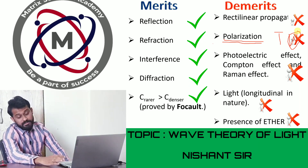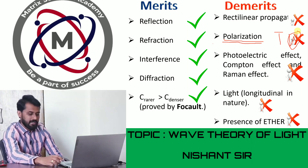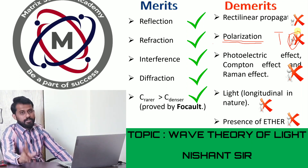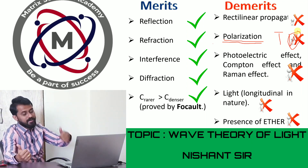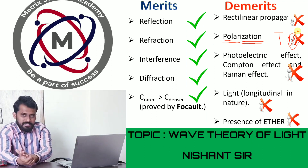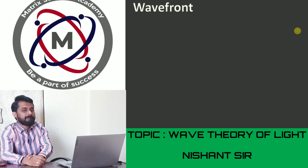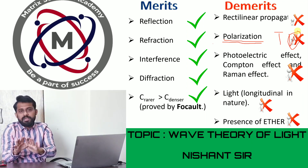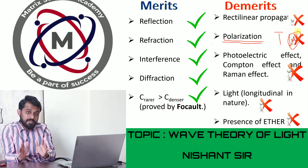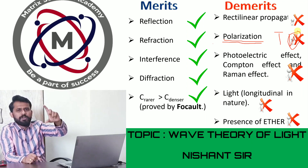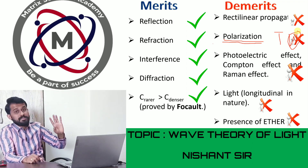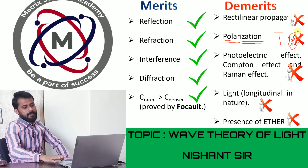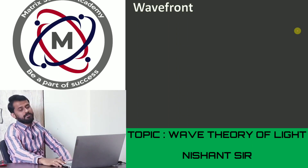Our present understanding is that light has a dual nature - both wave and particle. We use wave theory to explain reflection and refraction, and quantum (particle) theory to explain photoelectric, Raman, and Compton effects. Now we move to the next part of Huygens' wave theory: the concept of wavefront.